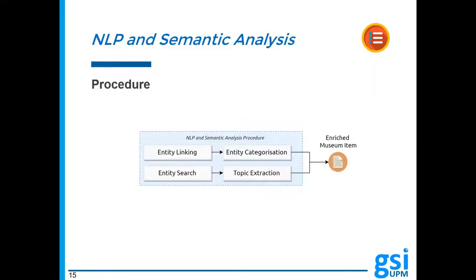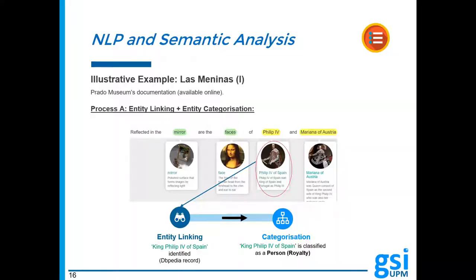The NLP and semantic analysis stage consists of two parallel processes. Process A performs entity linking and entity categorization procedures, and Process B performs an entity search and extracts topics of that entity from its corresponding DBpedia record. These processes are clarified with an illustrative example — the renowned artwork Las Meninas by the Spanish painter Diego Velázquez. In Process A, the textual description of the exhibit is analyzed with an entity linking tool. A phrase from Las Meninas documentation from Prado Museum's online collection is used to illustrate this. The term 'Philip IV' has been recognized as Philip IV of Spain and linked to its corresponding DBpedia entry. Afterwards, entities are classified conforming to the category they represent, using different ontology terms to describe diverse properties according to their type. This categorization procedure is primordial because only this way can one appropriately query for details of given resources on DBpedia using the right ontology terms, and hence ask appropriate questions.